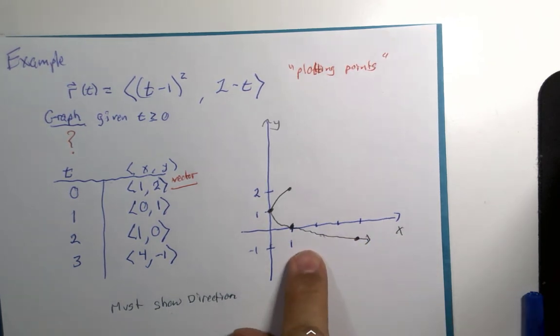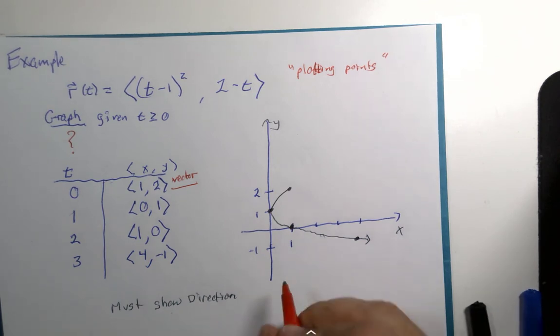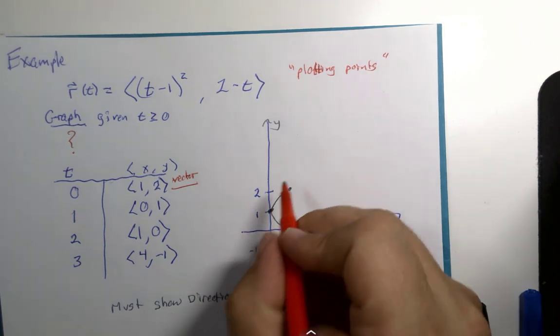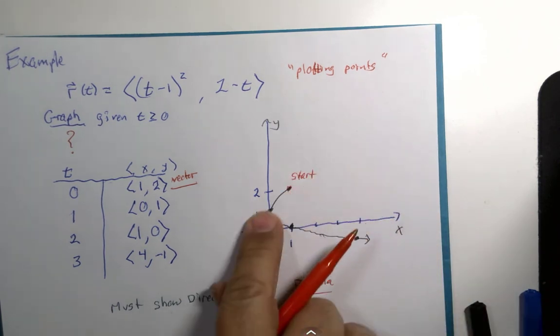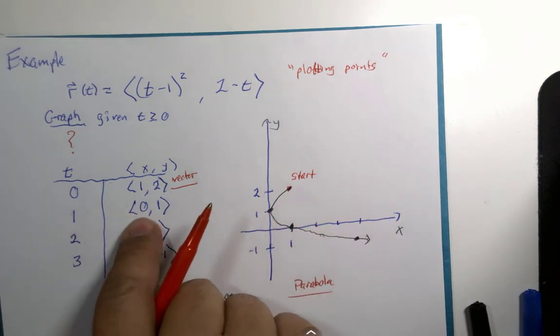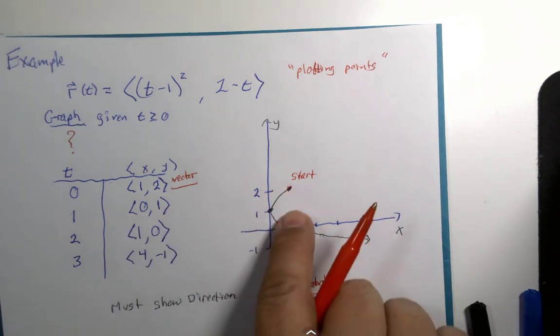It's going to continue on and you might even recognize that this is a parabola. But we begin here, our journey. This is our starting point and we continue in this direction. I don't necessarily need you to label the starting point if you've made a table, but if you don't make a table then I need you to tell me the starting point.